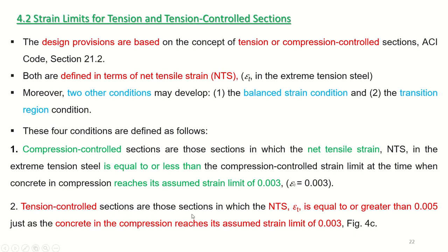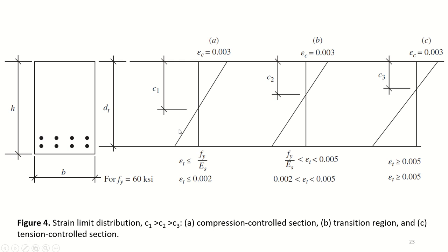Tension control is when the net tensile strain in steel is greater than 0.005 when concrete reaches 0.003. So in both sections we are evaluating what happens when concrete is at 0.003. In compression control, steel is still below its yield strain limit; in tension control, the strain in steel is greater than 0.005.